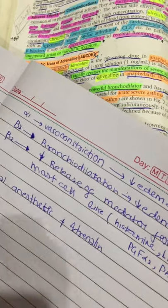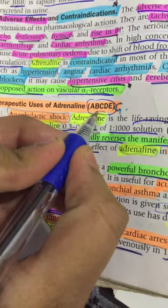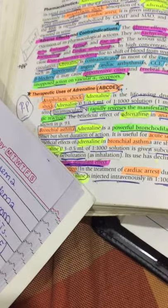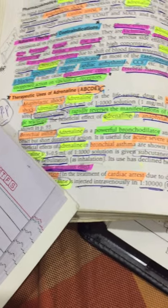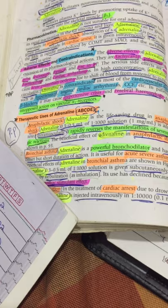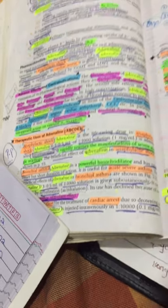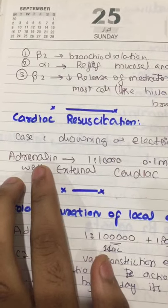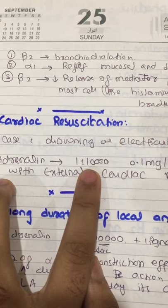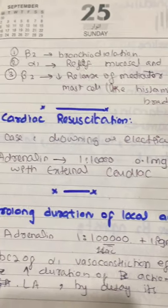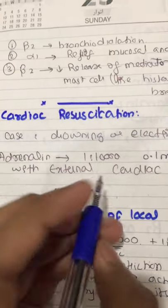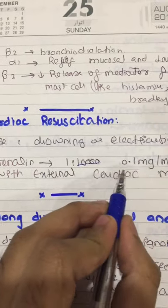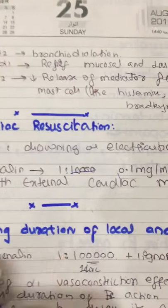C is cardiac resuscitation. For cardiac resuscitation, the concentration used is 1:10,000, which is 0.1 mg per ml, and it is used along with external cardiac massage.